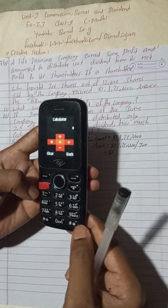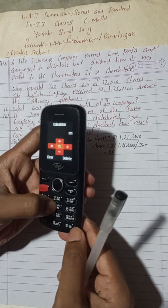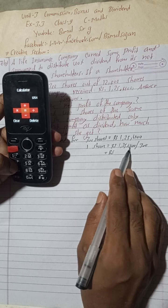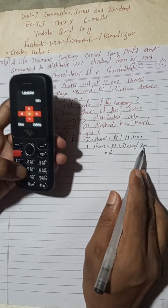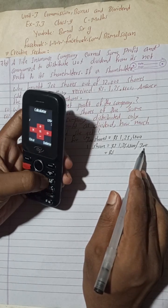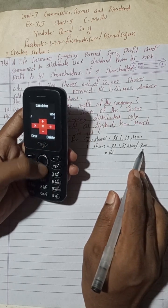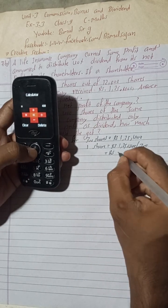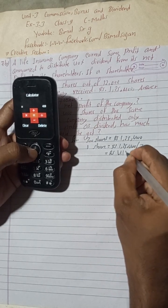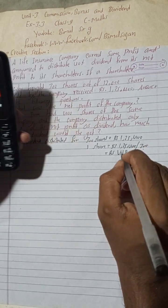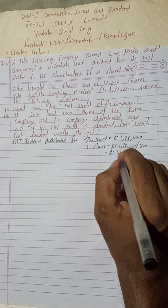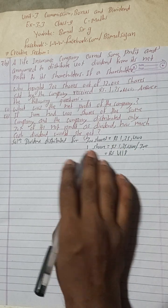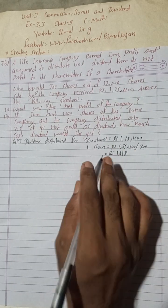1254 divided by 3 gives us Rs 418. So we got Rs 418 for one share.